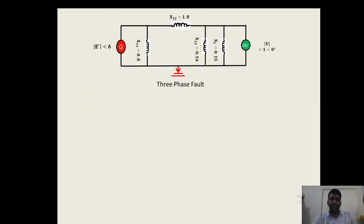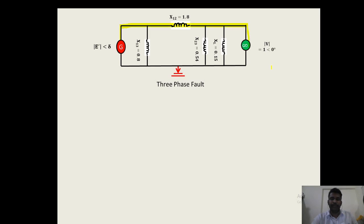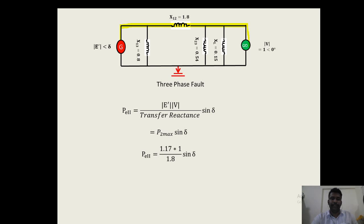From the delta equivalent circuit, the transfer reactance between generator and infinite bus during the fault is X2 = 1.8 per unit. Therefore, P2 = (E'V / X2) × sin(delta) = (1.17 × 1 / 1.8) × sin(delta), giving P2_max = 0.65 per unit.